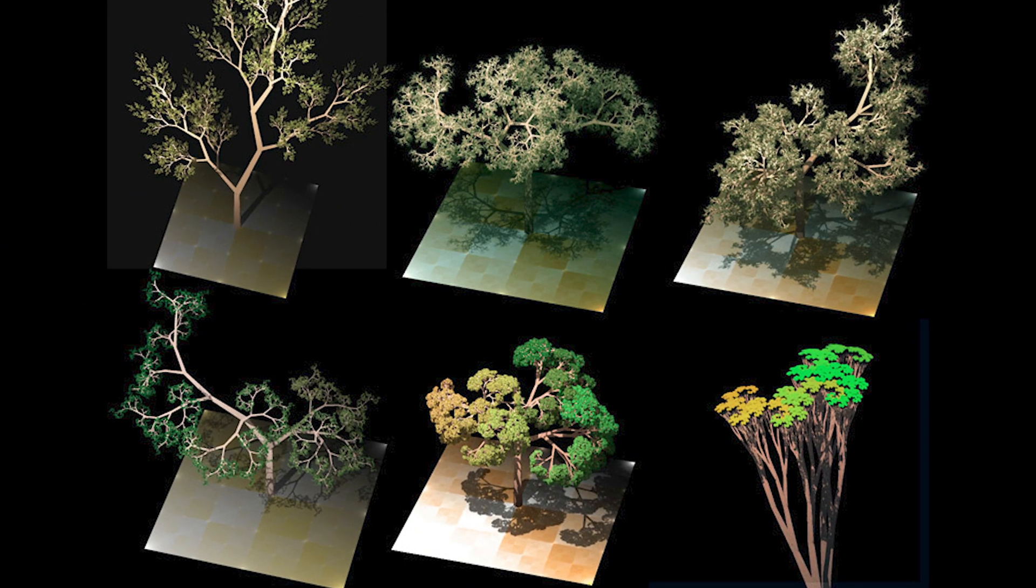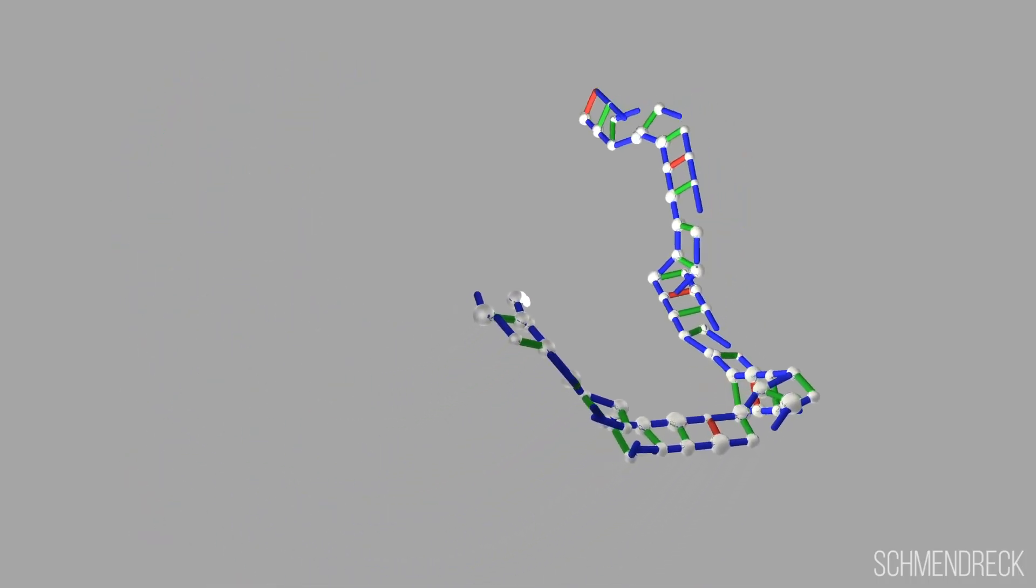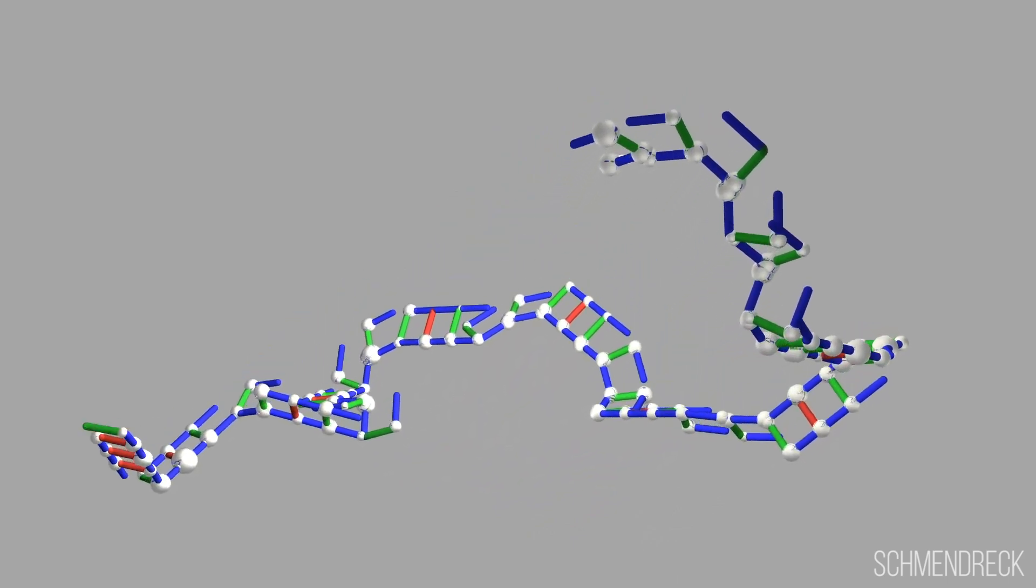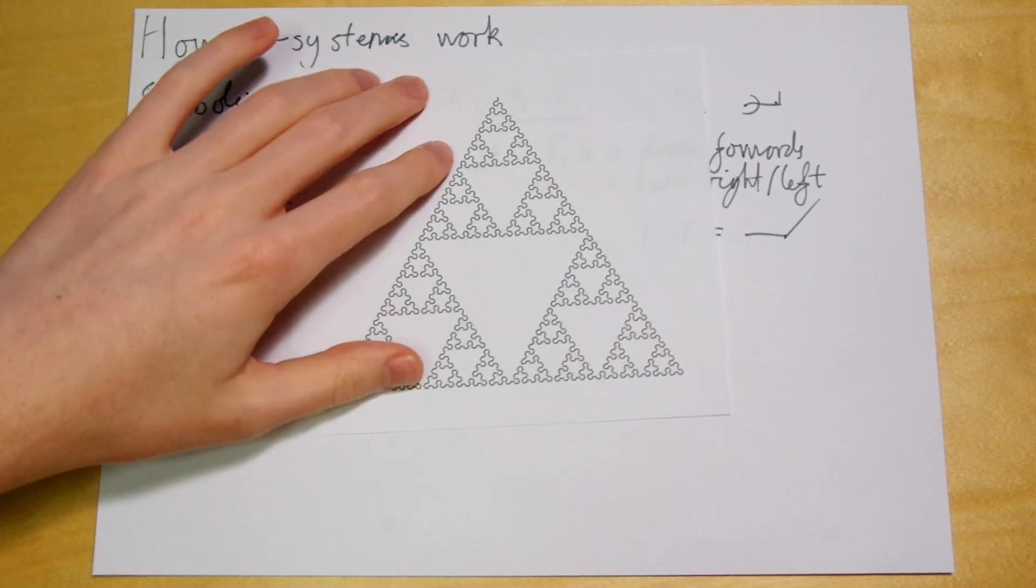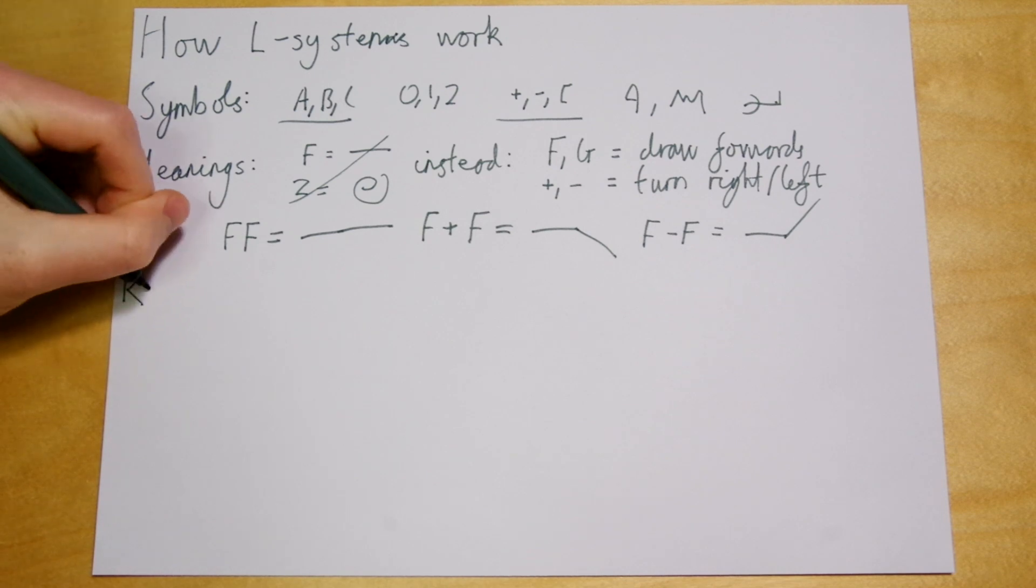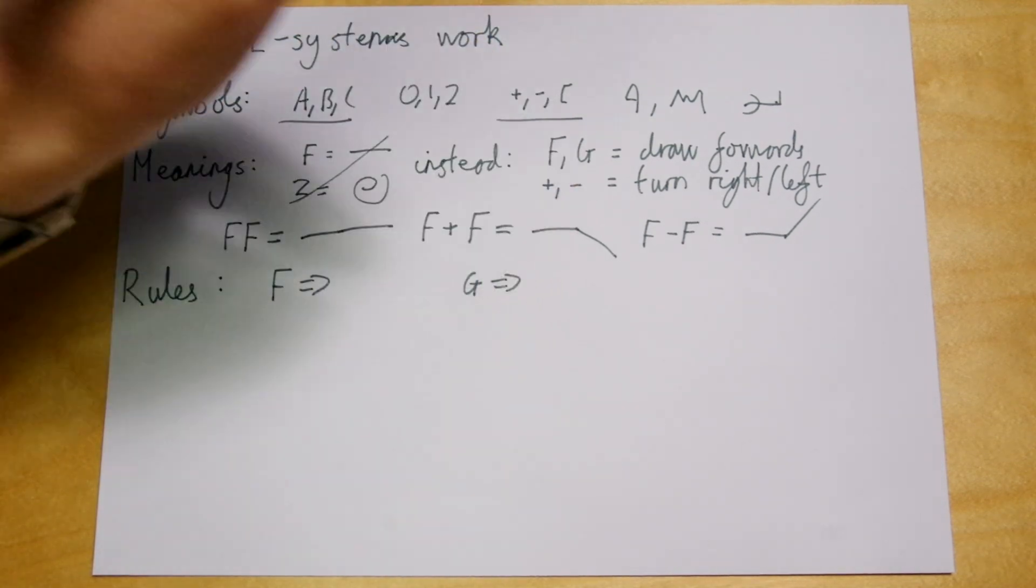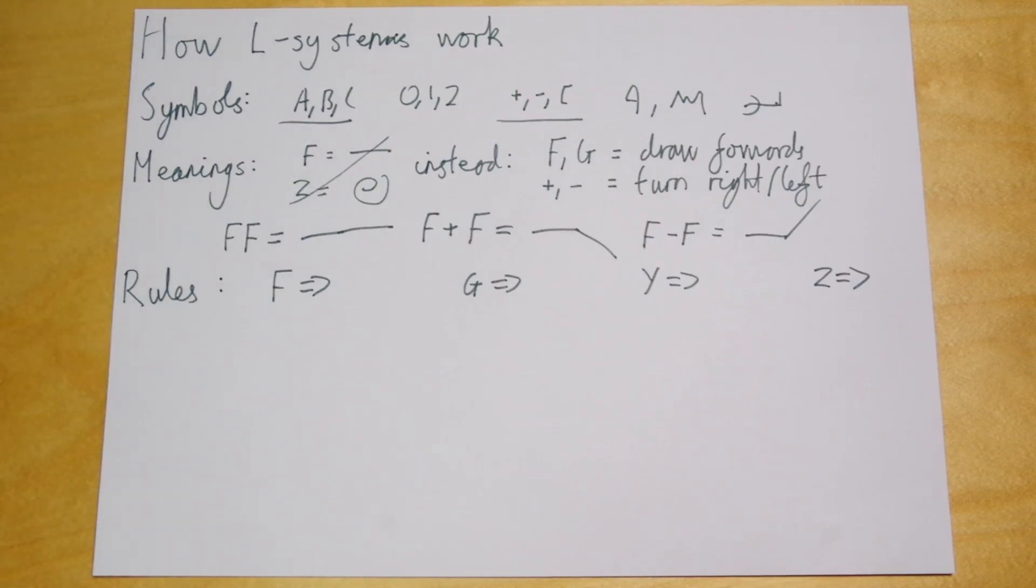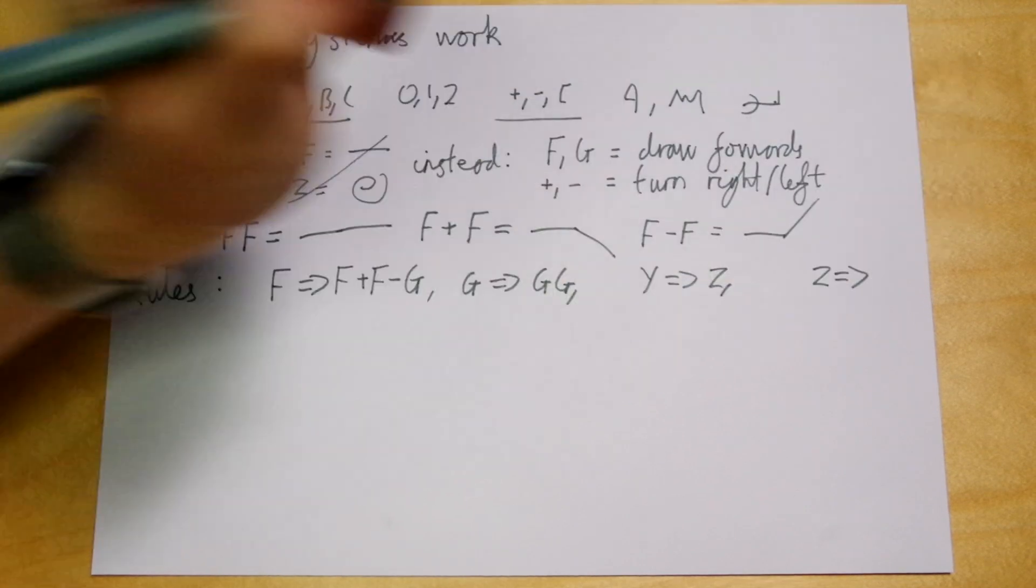You can construct all sorts of beautiful and interesting drawings just using these symbols, but that would mean using a lot of them. For example, this requires over six and a half thousand symbols to draw and that would take a very long time to write out. So instead, we use rules to generate complicated strings of symbols, iterations, from simpler ones. A rule says to replace one symbol, say F or G or Y or Z, with some others. Maybe several, maybe just one, or none at all.